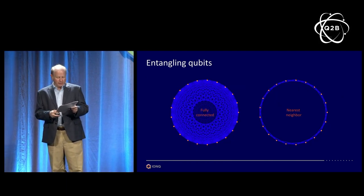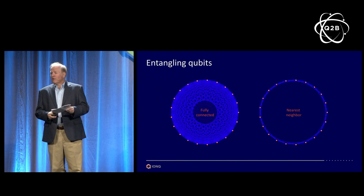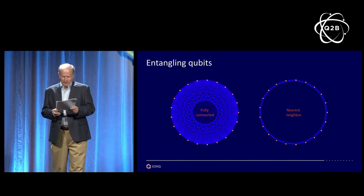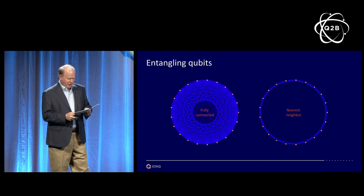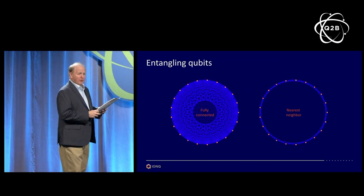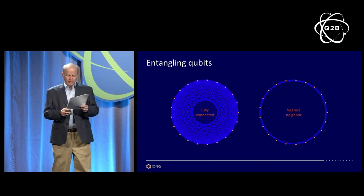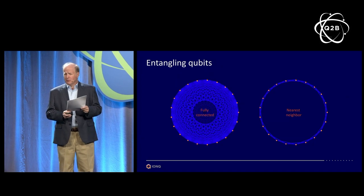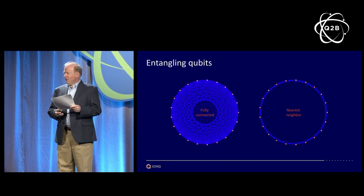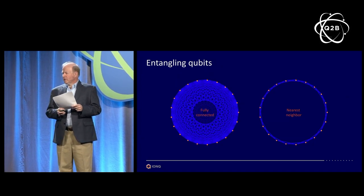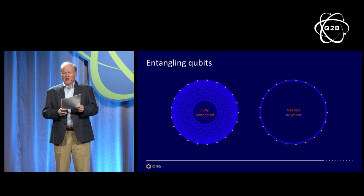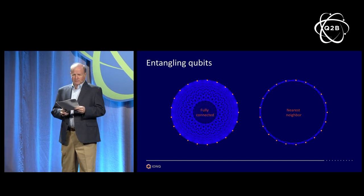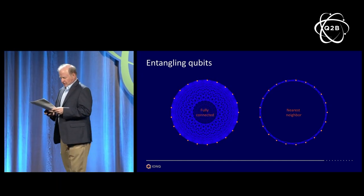I want to close by talking about four top misconceptions I've heard in my time in quantum computing. Number one: you need a dilution refrigerator to build a quantum computer. I hear that all the time. We run at room temperature — we have nothing which is less than 65 degrees, unless it's a hot day outside. So you don't need a dilution refrigerator.